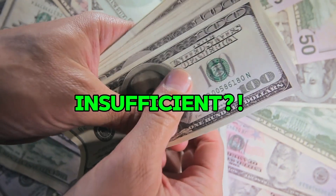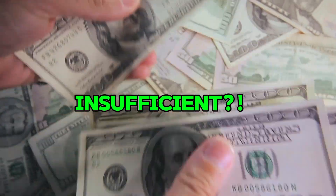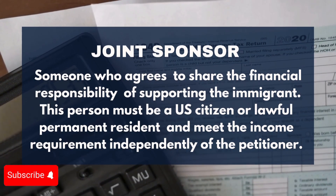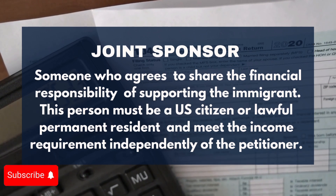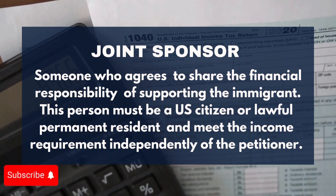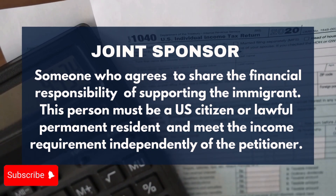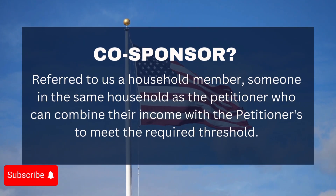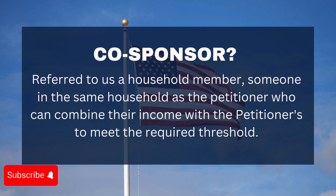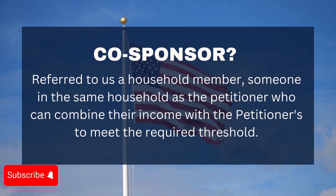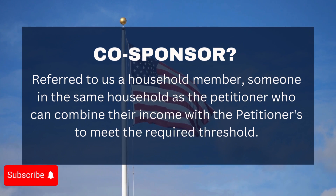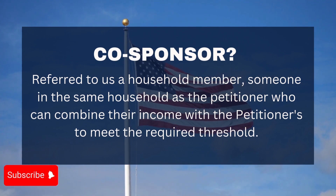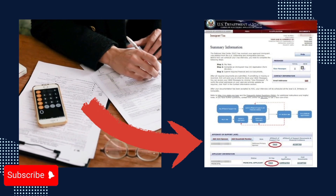Sometimes the petitioner's income isn't sufficient — that's when you can seek a joint sponsor or co-sponsor. A joint sponsor is someone who agrees to share the financial responsibility of supporting the immigrant. This person must be a US citizen or lawful permanent resident and meet the income requirement independently of the petitioner. A co-sponsor, also referred to as a household member, is someone in the same household as the petitioner who can combine their income with the petitioner's to meet the required threshold. Both roles are vital in ensuring the US government has confidence that the immigrant will not become a public charge.